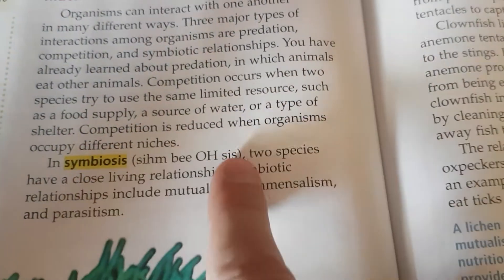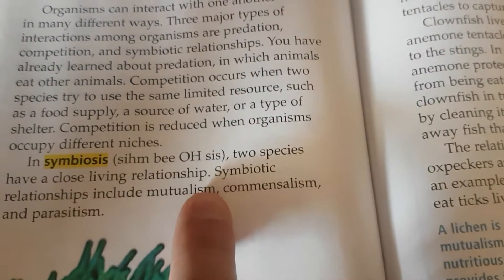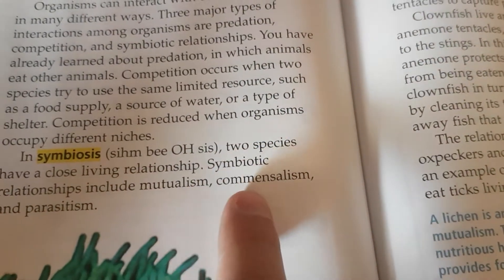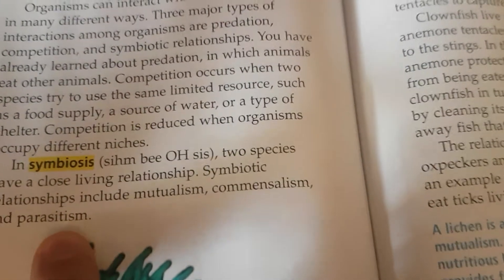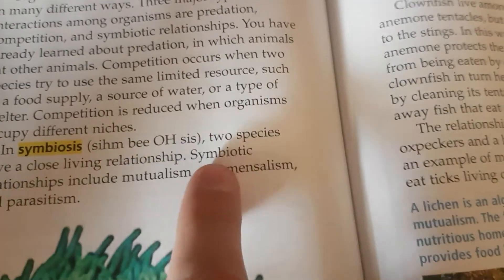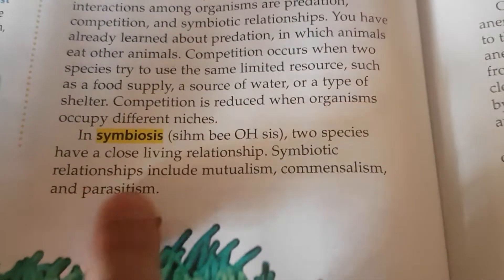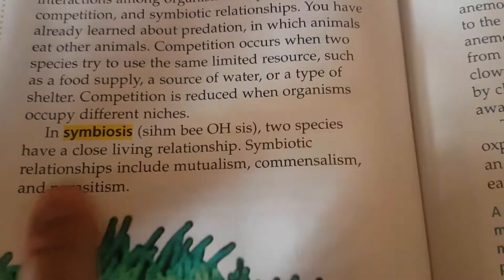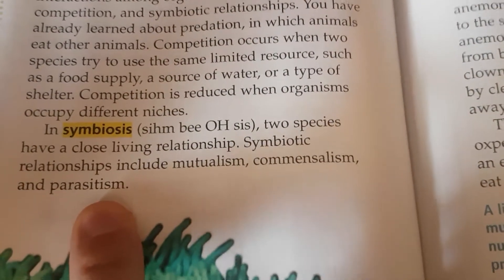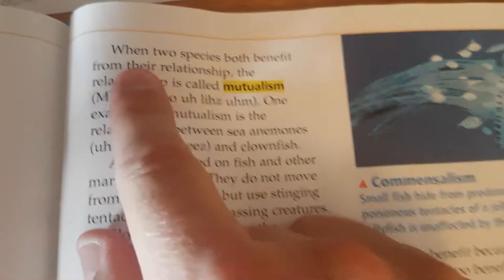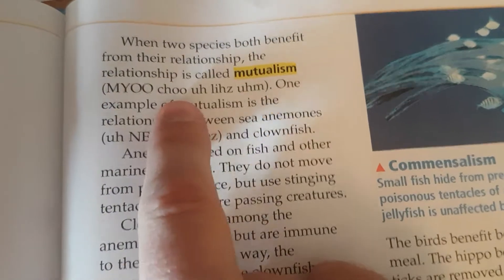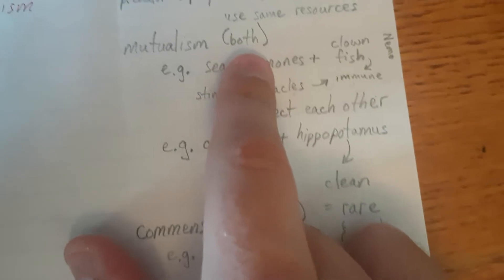In symbiosis, two species have a close living relationship. Symbiotic relationships include mutualism, commensalism, and parasitism. Practice saying those words: symbiotic relationships, mutualism, commensalism, parasitism. When two species both benefit from their relationship, the relationship is called mutualism — reminding ourselves that that is both.